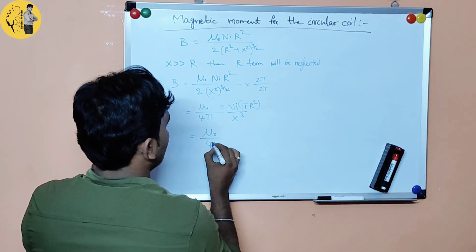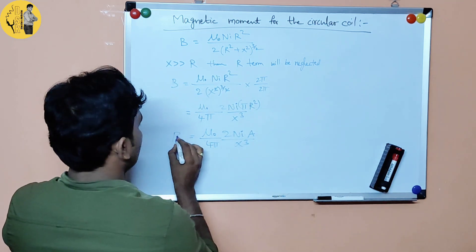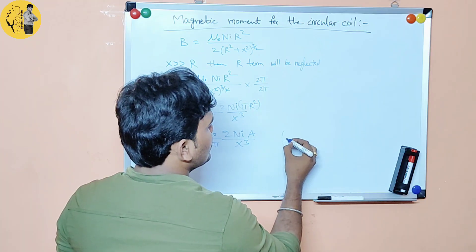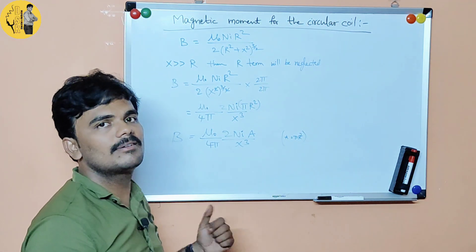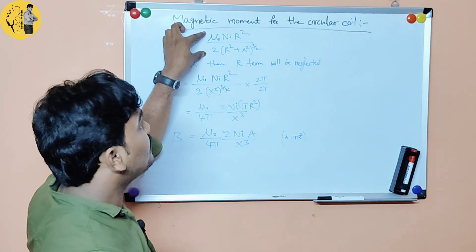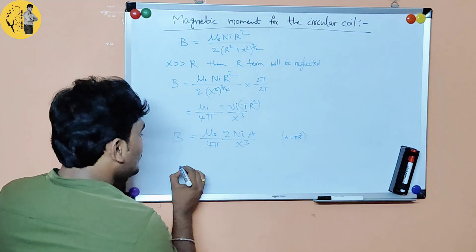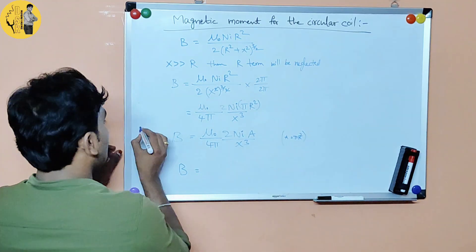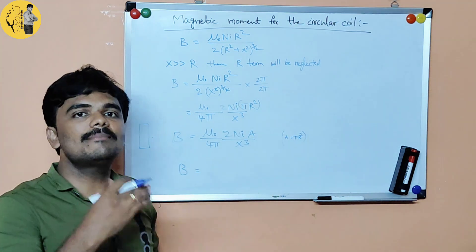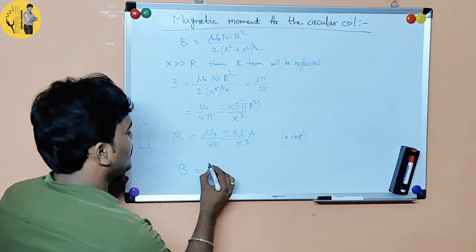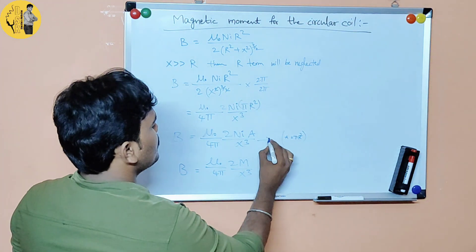So the expression becomes: B equals mu naught by 4 pi, times 2 N i A divided by x cubed. This is the expression for the magnetic field on the axial line of a circular coil. Now we compare this with the magnetic field on the axial line of a bar magnet.